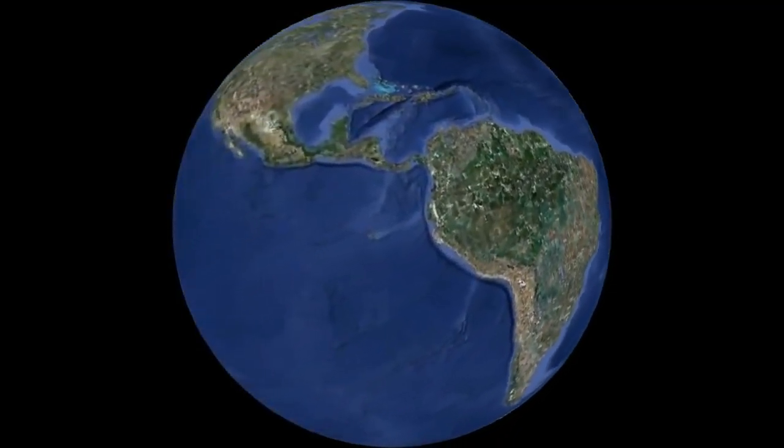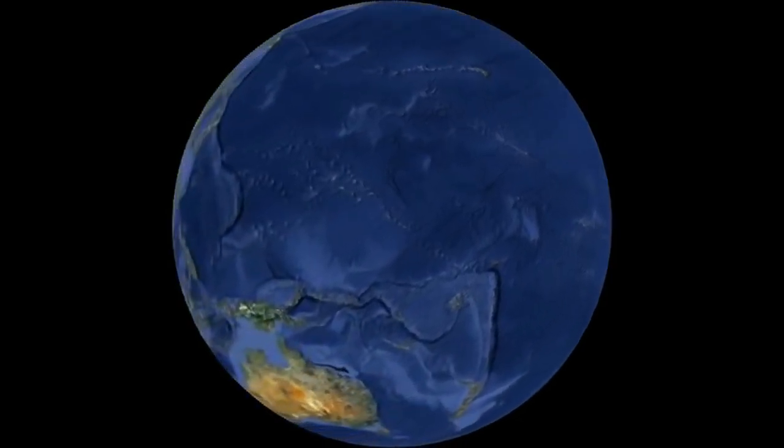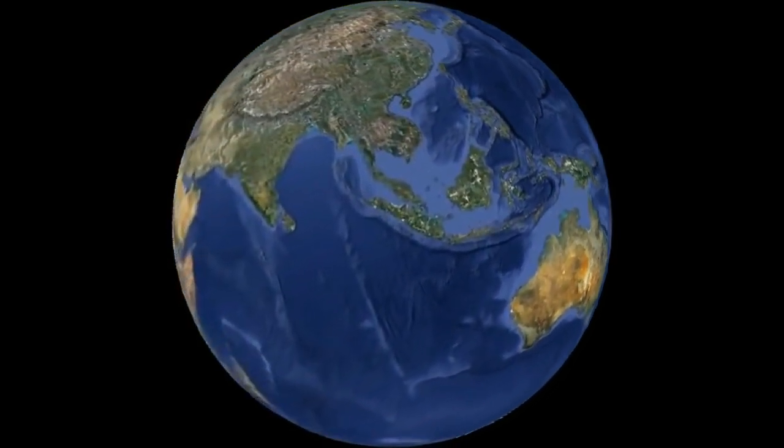There's a rumor going around that the Earth spins on its axis, roughly 360 degrees in 24 hours.